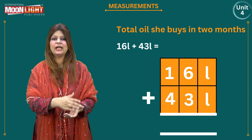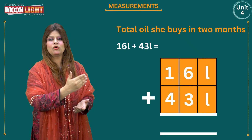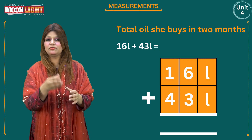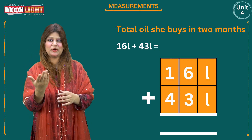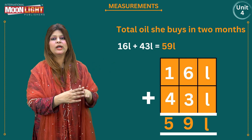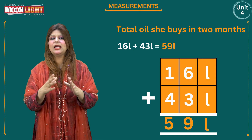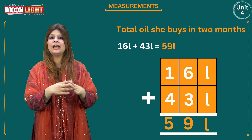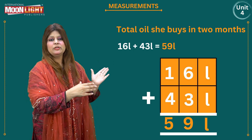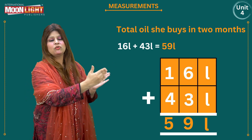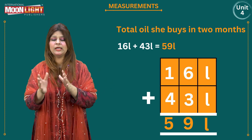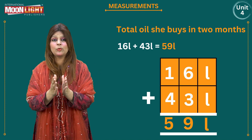So here we go: 16 liters plus 43 liters. I draw a line and start from the right-hand side. 6 plus 3 is 9, 1 plus 4 is 5 — so 59 liters is the answer. I have written it both vertically and horizontally: 16 liters plus 43 liters is equal to 59 liters.